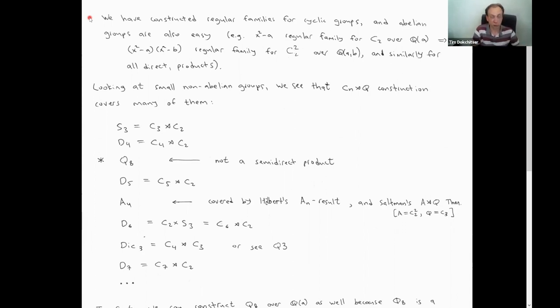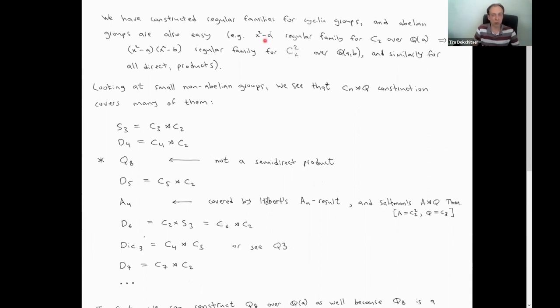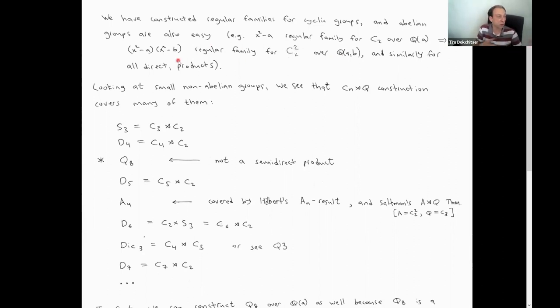For example, there is an exercise to do this carefully for C2 × C2, but the same idea works for arbitrary groups. Basically, if you take a family for C2, such as x² − A, and take another regular family for C2 in a different variable, x² − B, and just take the product of these two polynomials, it's very easy to see that it gives you a regular family for C2² over Q(A,B). And Hilbert's specialization theorem tells you that specializing one of these variables — say B to A+1 or something — will probably give you a regular family in one variable.